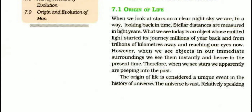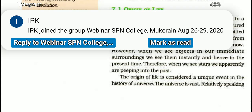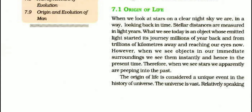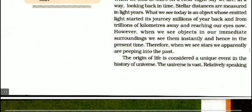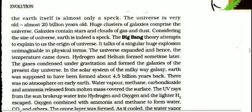When we look at stars on a clear night sky, we are in a way looking back in time. Stellar distances are measured in light years. An object whose emitted light started its journey millions of years back, travelling trillions of kilometers, is reaching our eyes now. When we see objects in our immediate surroundings, we see them instantly in the present time. Therefore, when we see stars, we are apparently peeping into the past. The origin of life is considered a unique event in the history of the universe.